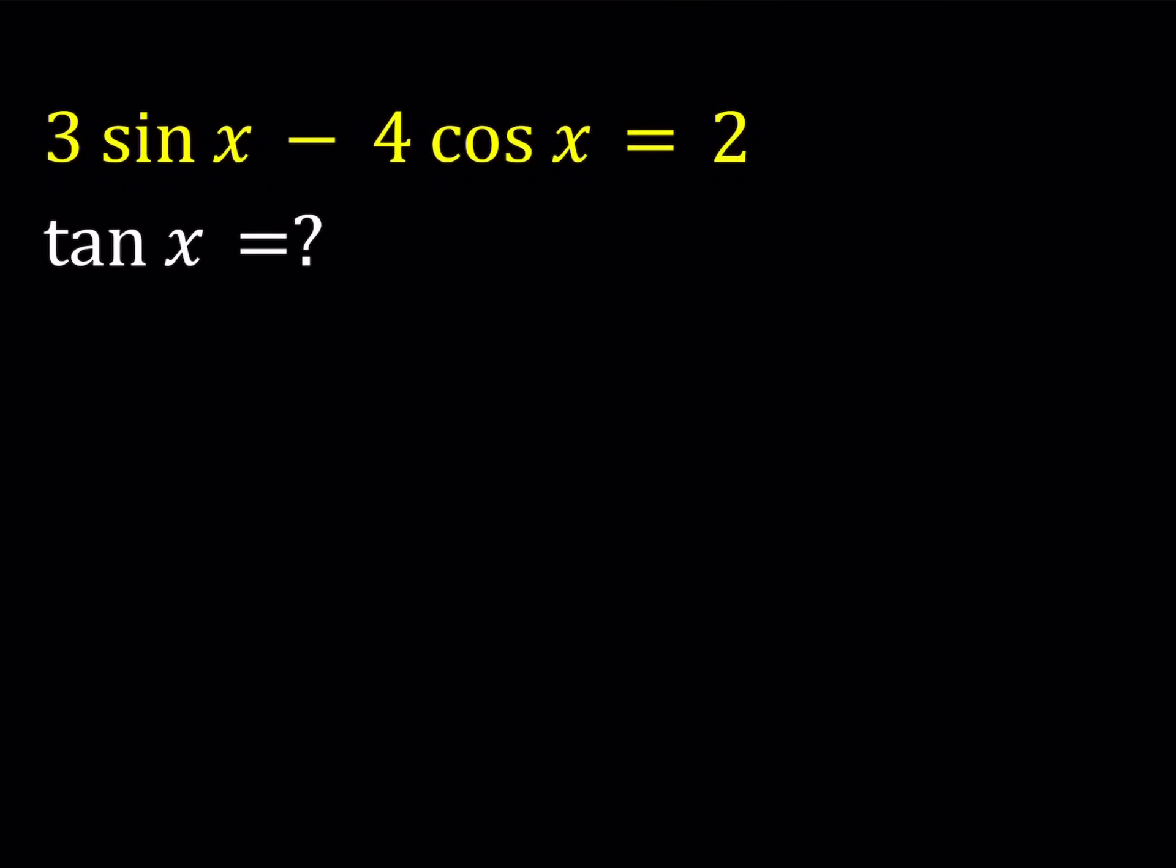Hello everyone. In this video we're going to be solving a trigonometric equation. We have 3 sine of x minus 4 cosine of x equals 2, and we are supposed to find tangent x. So I'll be presenting two methods here. Let's start with the first one.